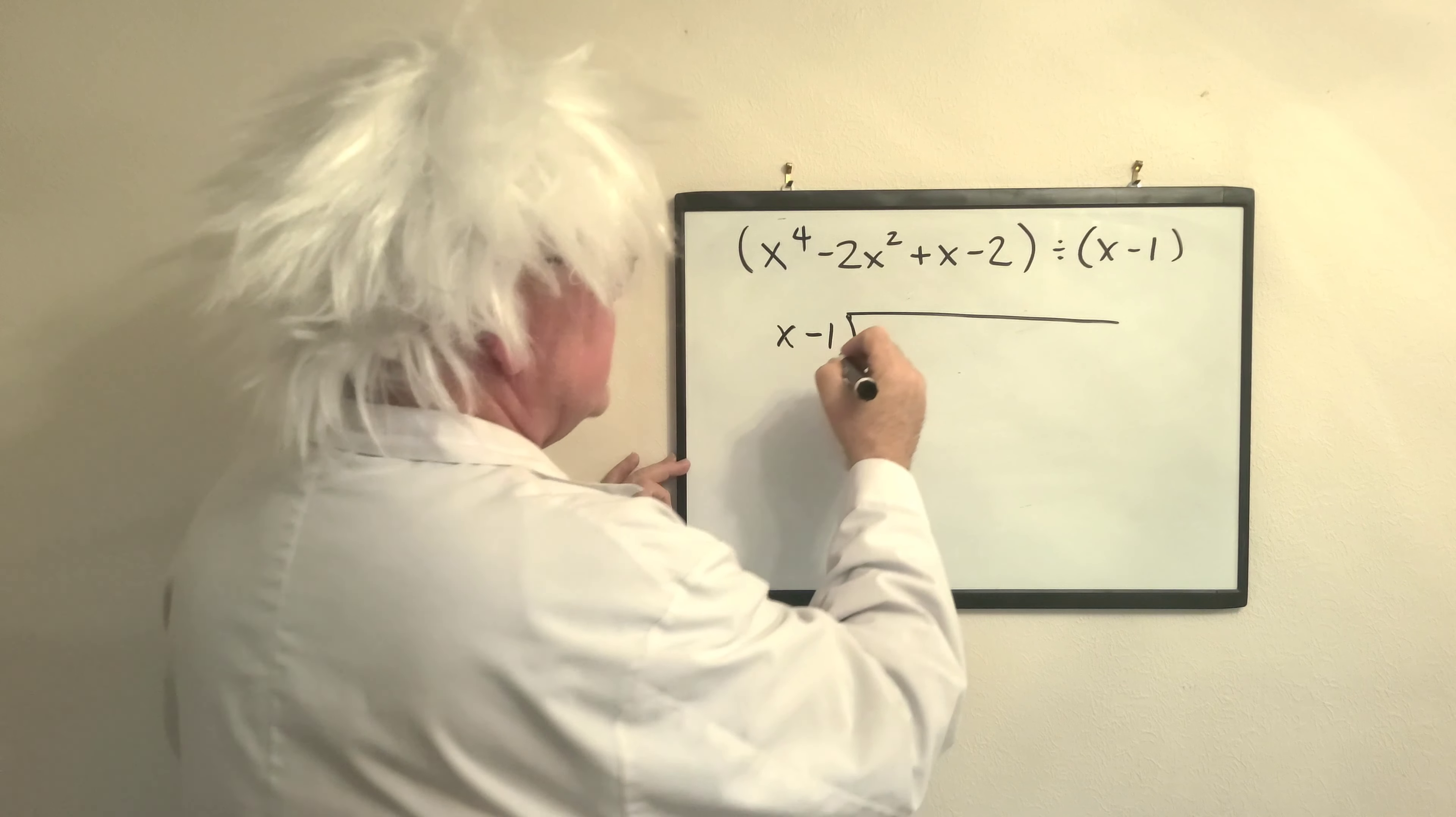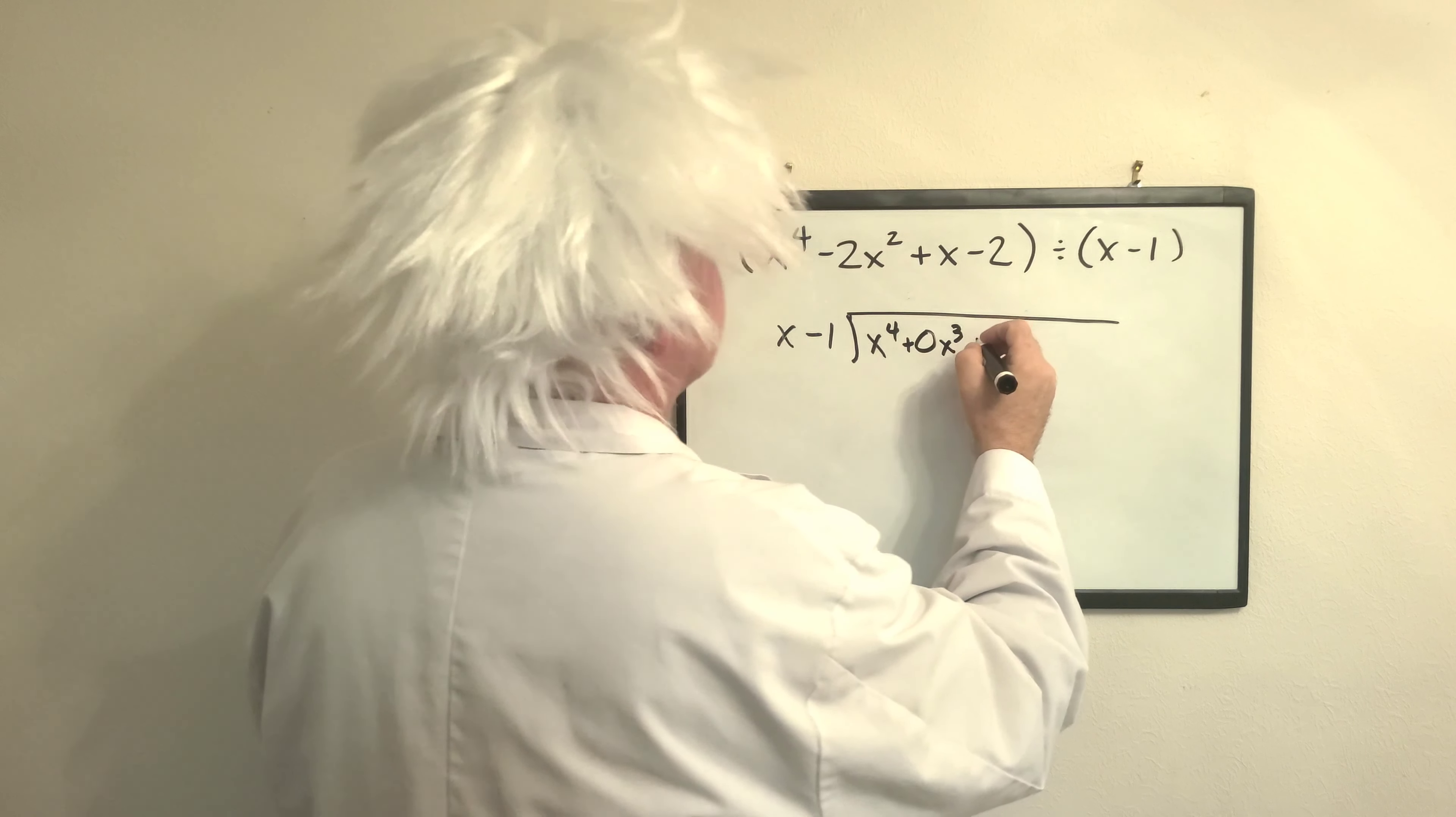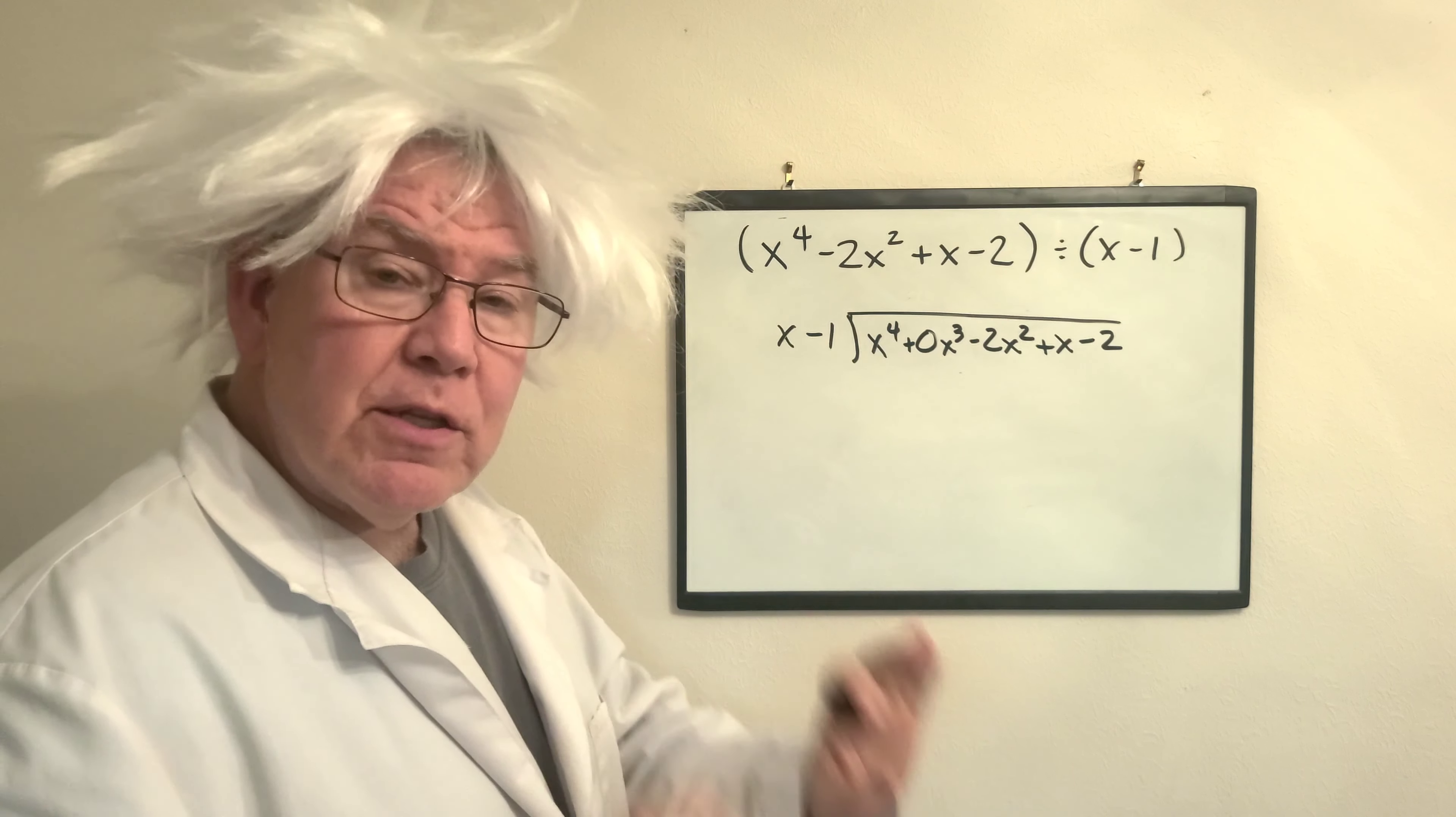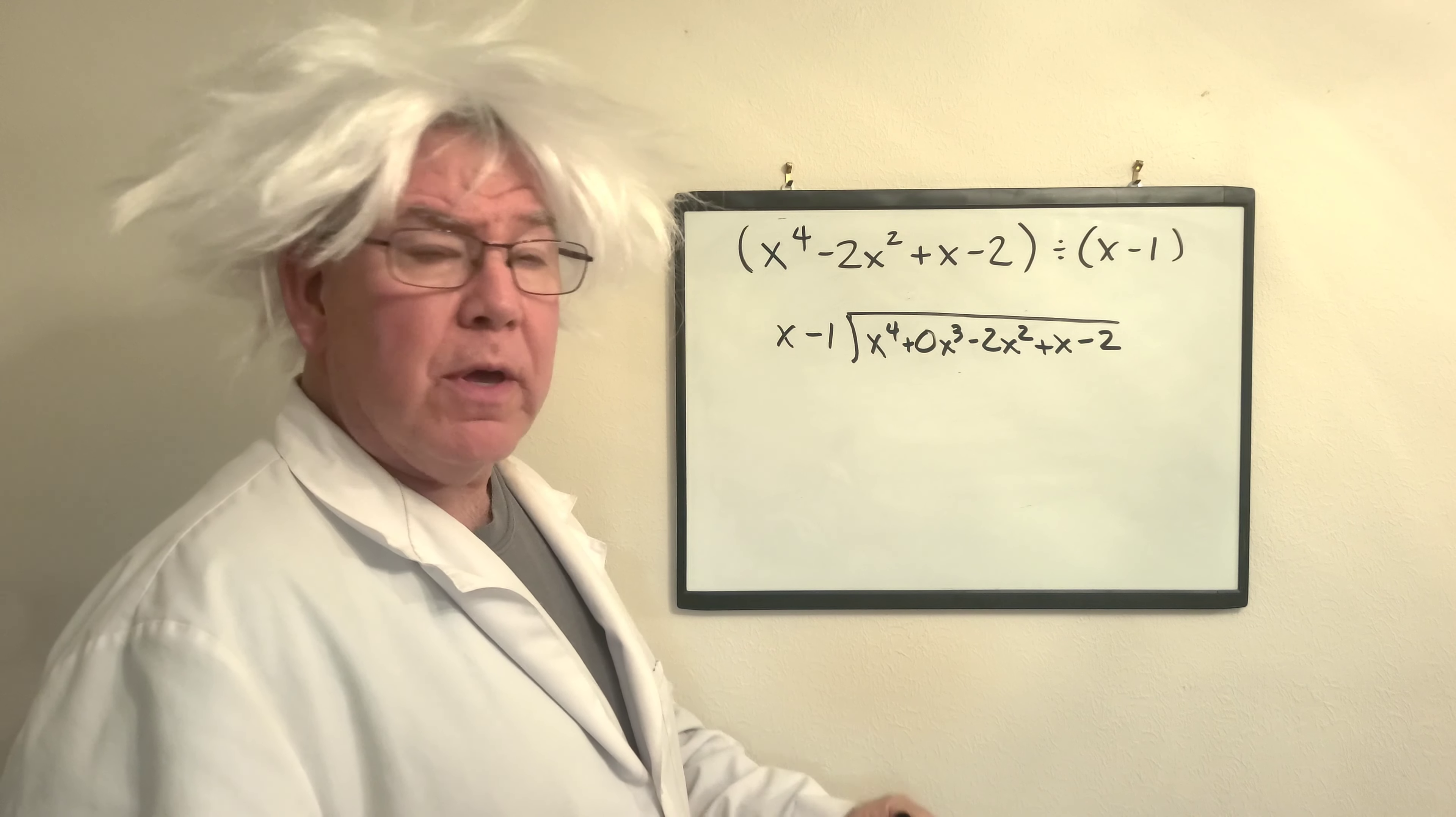So first thing I do, x to the fourth plus 0x cubed, that's my zero placeholder, minus 2x squared plus x minus 2. Now I'm going to try to slow this down, but this is going to take a while. So you got your bros and algebra, you got to hold on with me, okay?